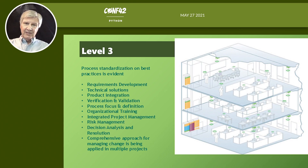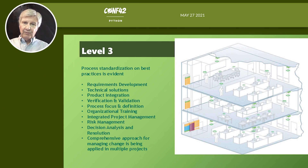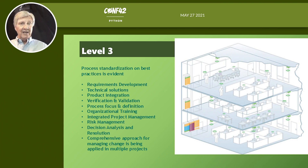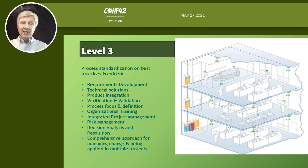At the third organization level — likely a Cisco-style architecture — you can see equipment on the ground floor supporting multiple users across racks. It's imperative to standardize requirements development, technical solutions, product integration, verification and validation, process focus and definition, and organizational training. At this point, you'll have log files turned on and a SIEM running, collecting specific data elements from every computer and parsing them with tools like Python to keep those organizations safe.